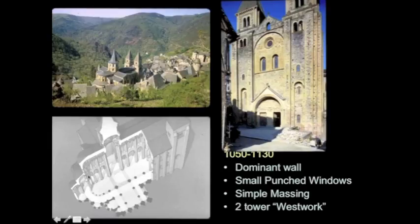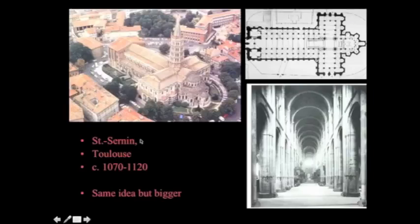When we look at the plan and the cutaway axonometric, we can see that this must be one of those little pilgrimage churches because we have radiating chapels and a barrel vault. This is Saint-Sernin in Toulouse. It's similar to the Saint-Foy church we looked at before, but a lot bigger in scale — a giant church with the same kind of composition of parts.